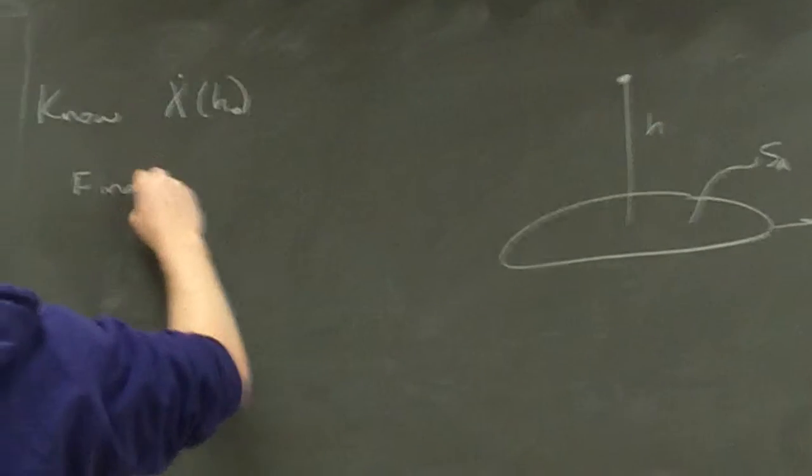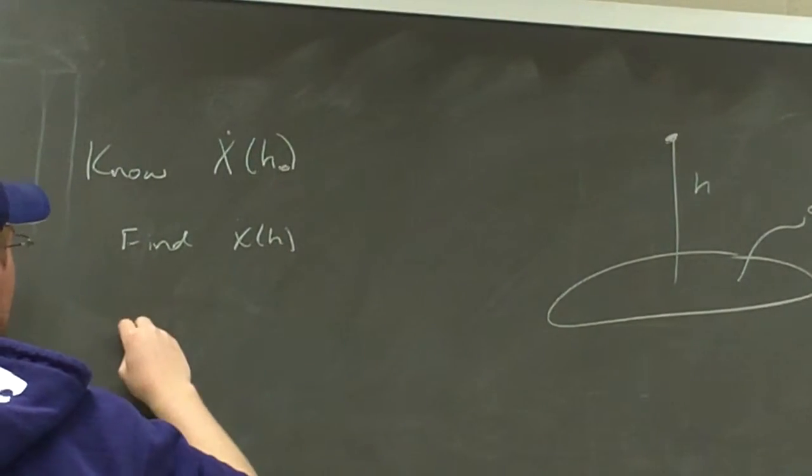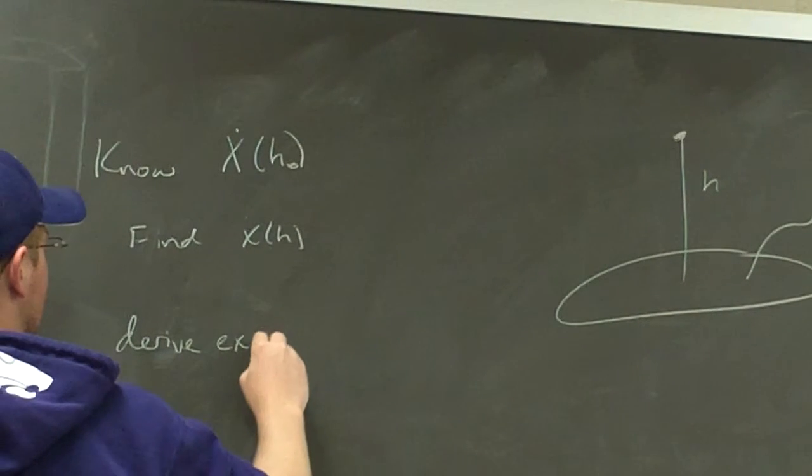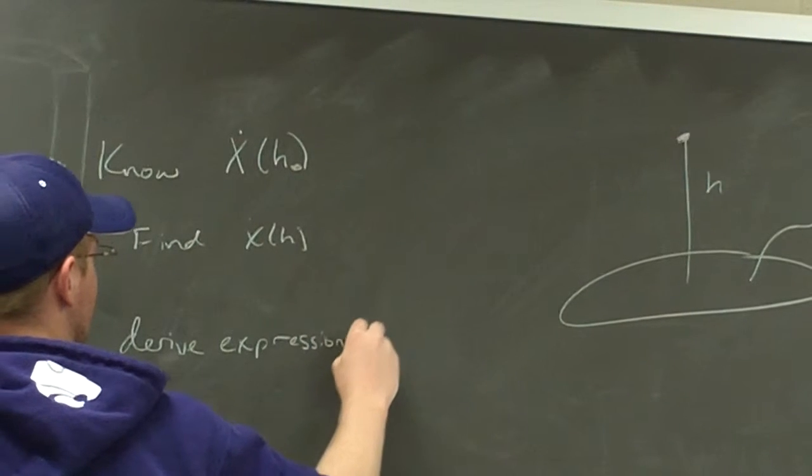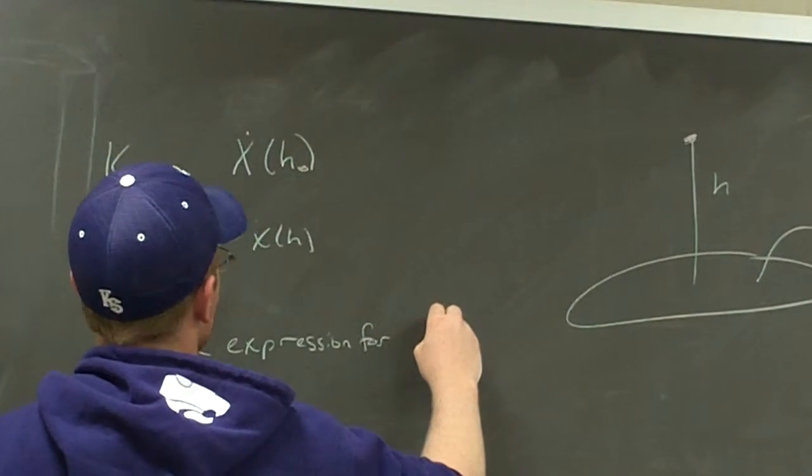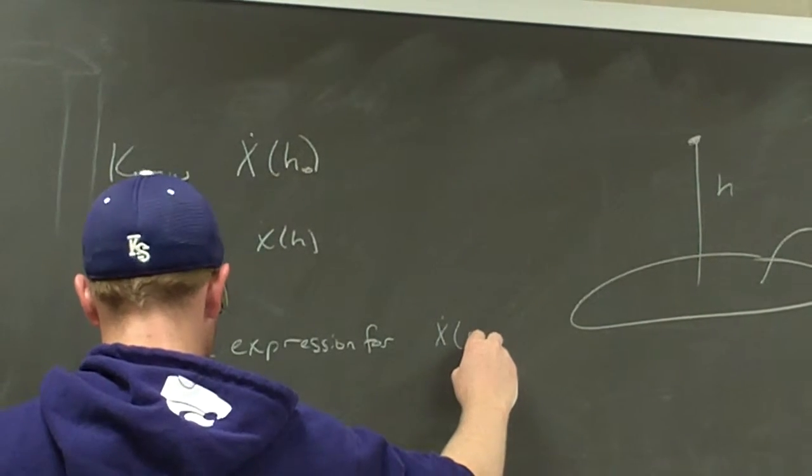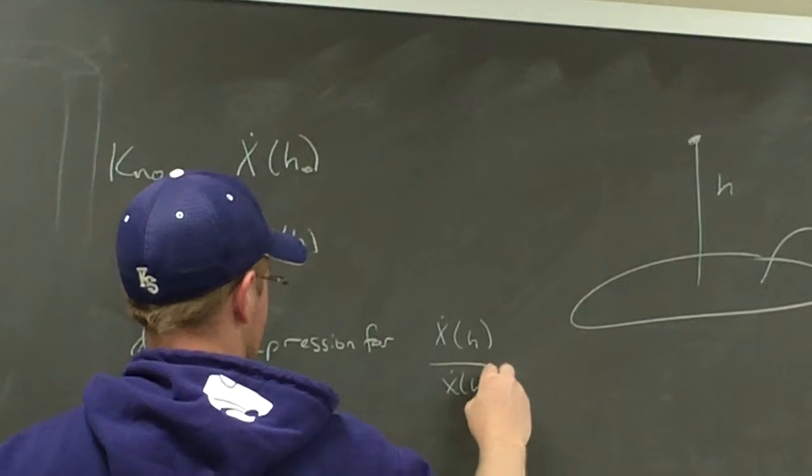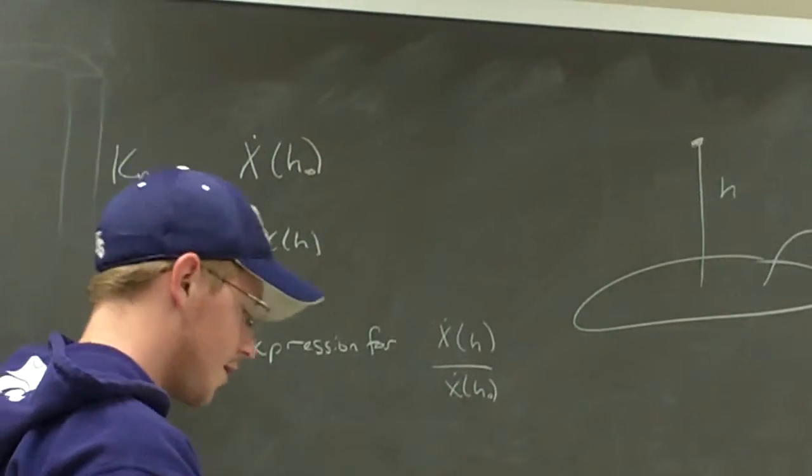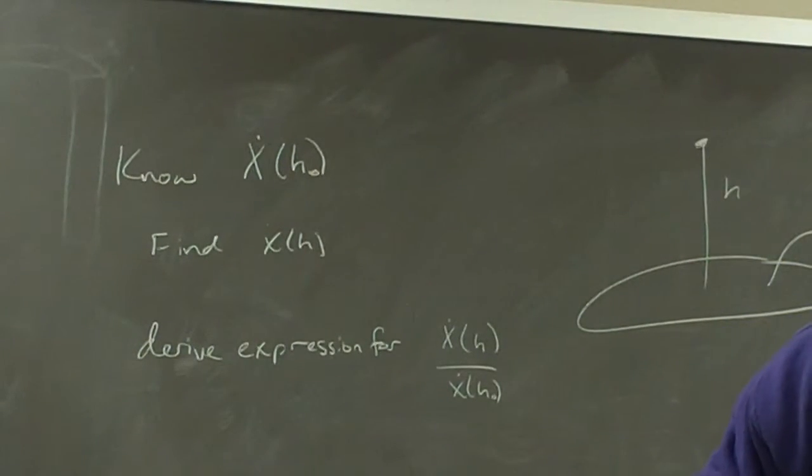And we want to find x at some h. So we want to derive an expression for x(h) over x(h naught). So this is a similar problem as before our homework, we're just full of homework problems.